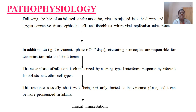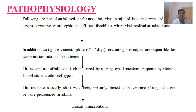Regarding the pathophysiology, following the bite of the infected Aedes mosquito, the virus will be injected into the dermis and from the dermis to the connective tissues and epithelial cells, where the virus usually starts to replicate. After replication, a phase will develop known as the viremic phase, which means the presence of virus in the blood, and this usually takes place between 5 to 7 days. At this time, the circulating monocytes are responsible for the dissemination of the viruses into the bloodstream.